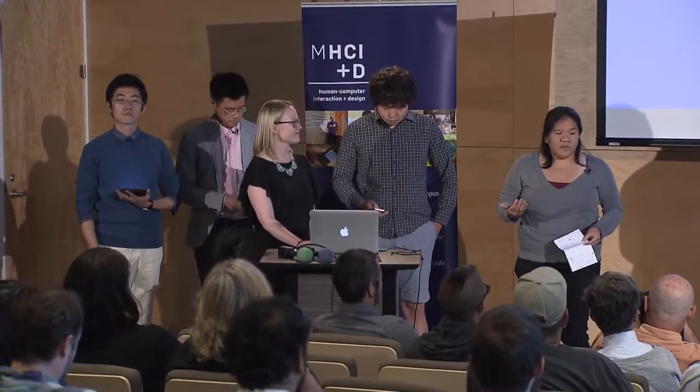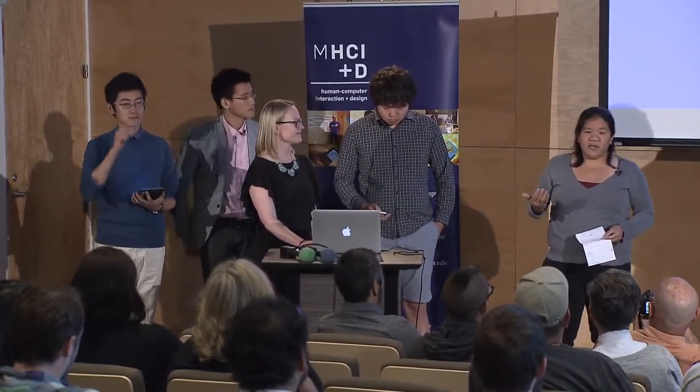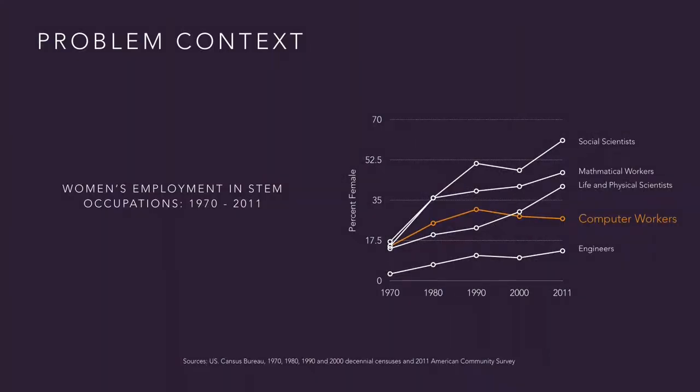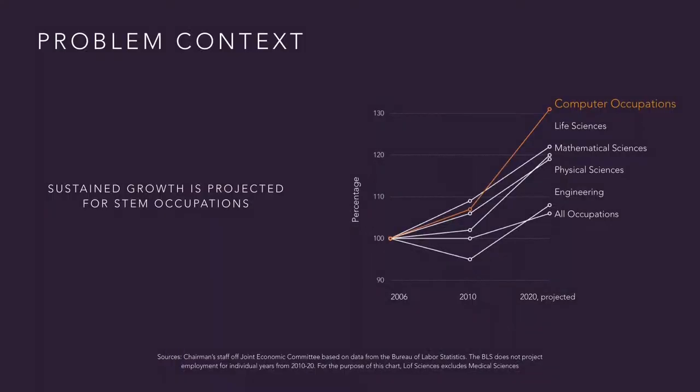What we wanted to address really was the gender gap in computer science. Although women are currently underrepresented across all fields of STEM — science, technology, engineering, and math — if you look at this graph here, the proportion of women working in our field of computing has actually been declining for the last 20 years. This is a really startling fact, because computer science is currently experiencing a shortage of workers, despite immense projected growth.